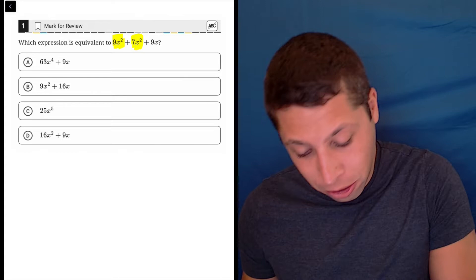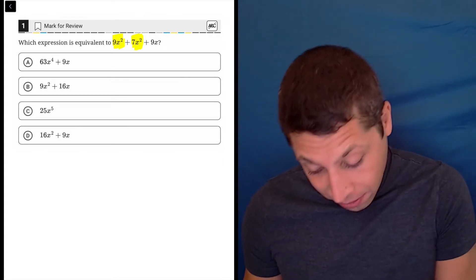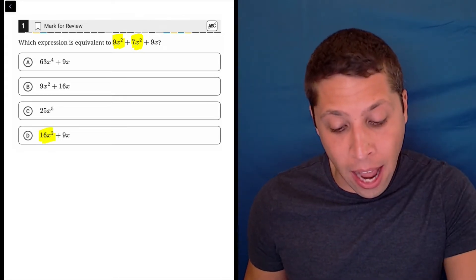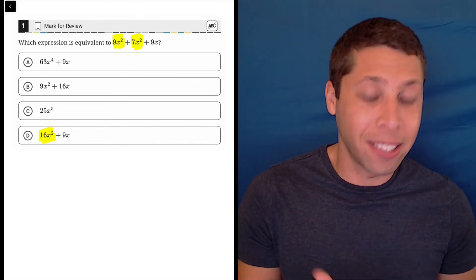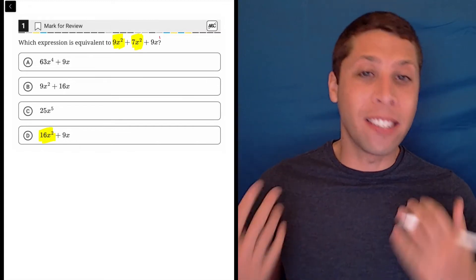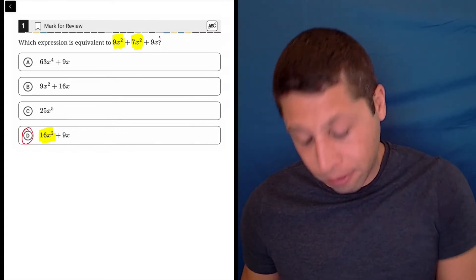So the two x squared terms can go together. 9 and 7 is 16, so that's where this comes from, and the 9x cannot be brought into the other x's because x by itself, or x to the first, is different from x squared, so that leaves us with D.